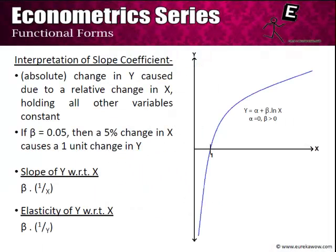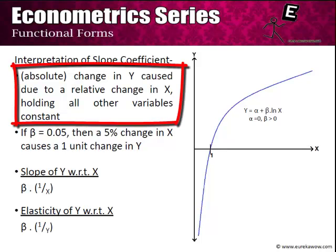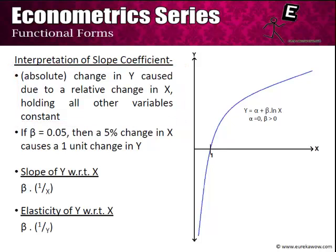To give a concrete example: if α = 0 and β > 0, then x and y have a positive relationship and the curve flattens as x increases. The interpretation of the slope coefficient is the absolute change in y caused by a relative change in x, ceteris paribus. For example, if β = 0.05, a five percent change in x causes a one-unit change in y — so a 5% change in interest rate would cause a one-unit change in GDP. The slope of y w.r.t. x is β/x and the elasticity is β/y.